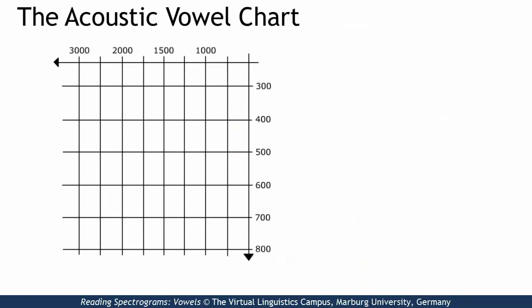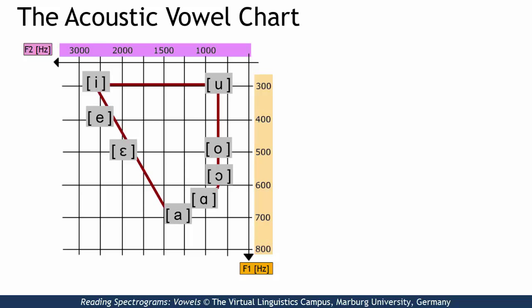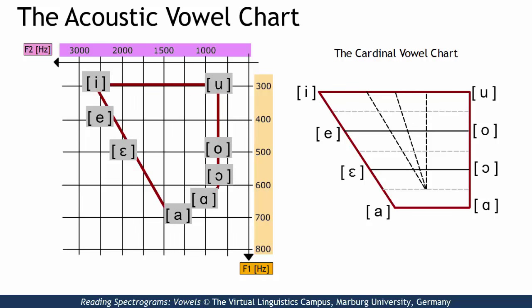In plotting the frequencies of F1 against the frequency of F2 on the horizontal axis, we find a pattern that is remarkably similar to the cardinal vowel chart. Yet the match is not exact because the articulatory cardinal vowel chart is based on the point of the greatest tongue constriction, whereas the acoustic chart takes its data from all vocal tract resonances.